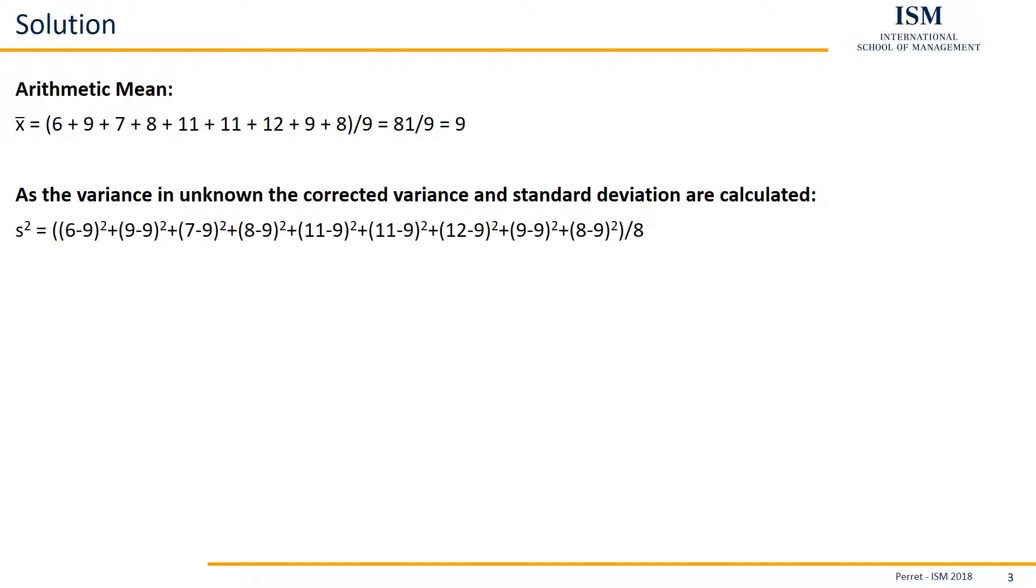And this can easily be calculated by the squared distance from the arithmetic mean, summed up for all observations. So we are doing this here for all 9 observations, summing it up, and then, because we are considering the corrected variance here, we just divide this by the number of observations minus 1, so here, by 8.